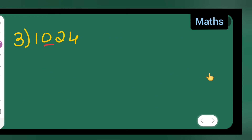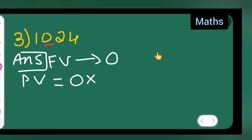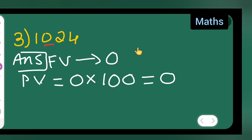Now the third one. The face value will be 0. The place value will be 0 multiplied by 100. If you multiply this by 100, the answer is 0, because any number multiplied by 0 is 0.